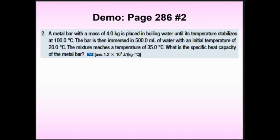Could it have reached 15°C? No — you can never go colder than the coldest starting temperature, and never hotter than the hottest. So the final must always be somewhere in between. The question asks: what is the specific heat capacity of the bar? That means you find C first, then identify the metal from the chart.